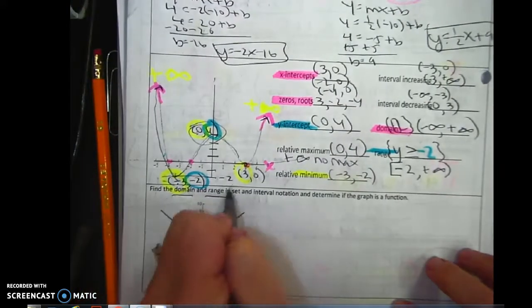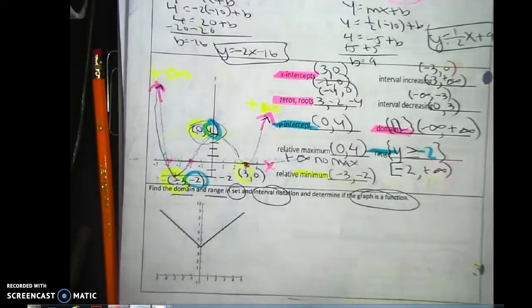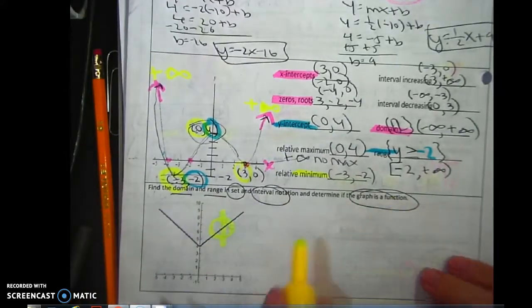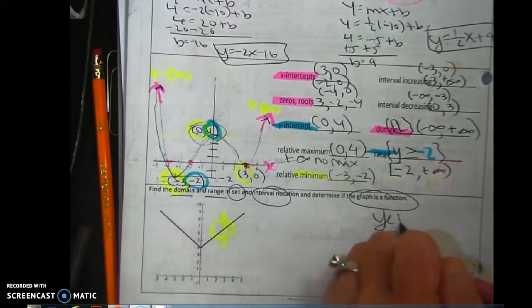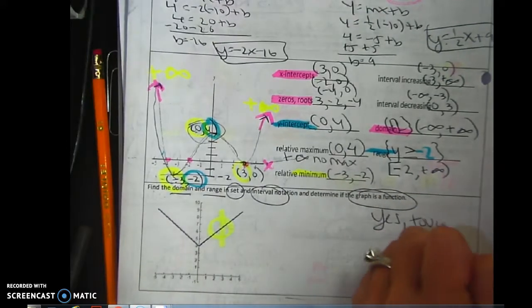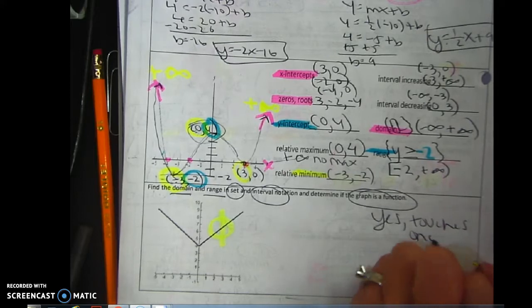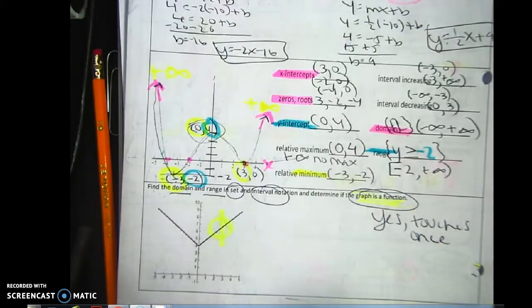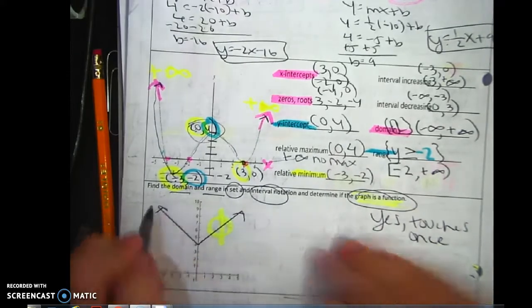Domain and range in set and interval notation and determine if it's a function. I'm going to do the function one first. It is a function. It only touches once. So the answer is yes. It touches once. So that's the function. Let's assume this goes forever, please. The domain. Domain is everything to the right and everything to the left. It's forever to the right, forever to the left. The domain is all real numbers. Negative infinity to positive infinity.